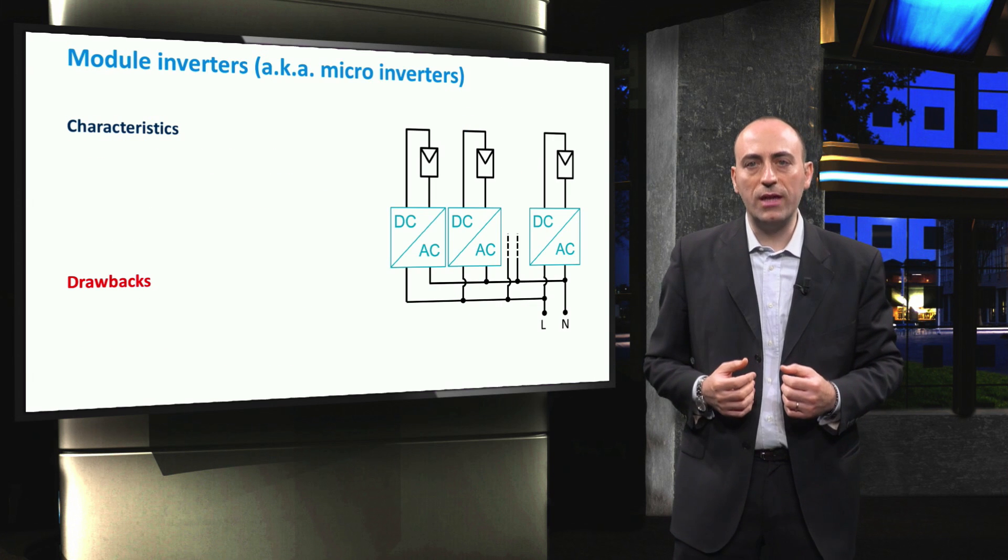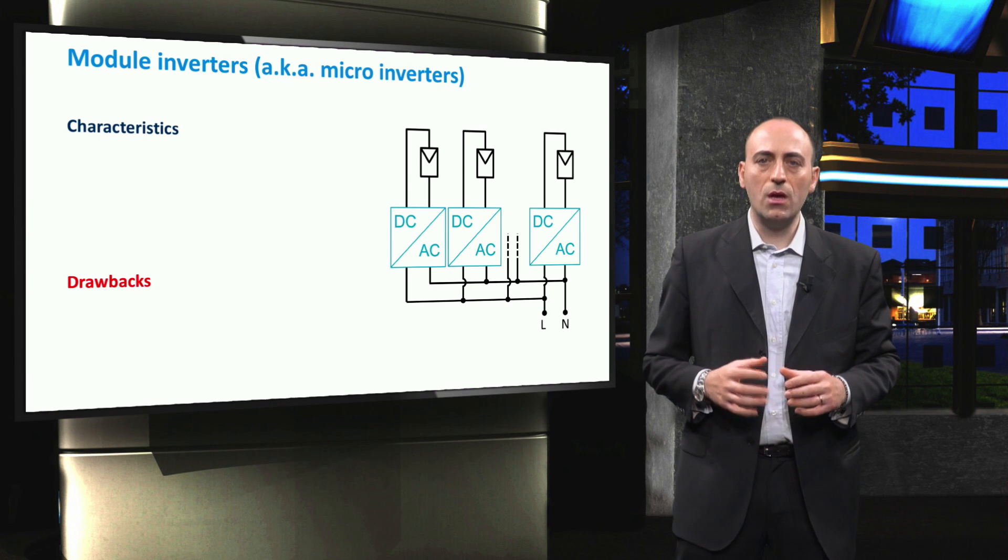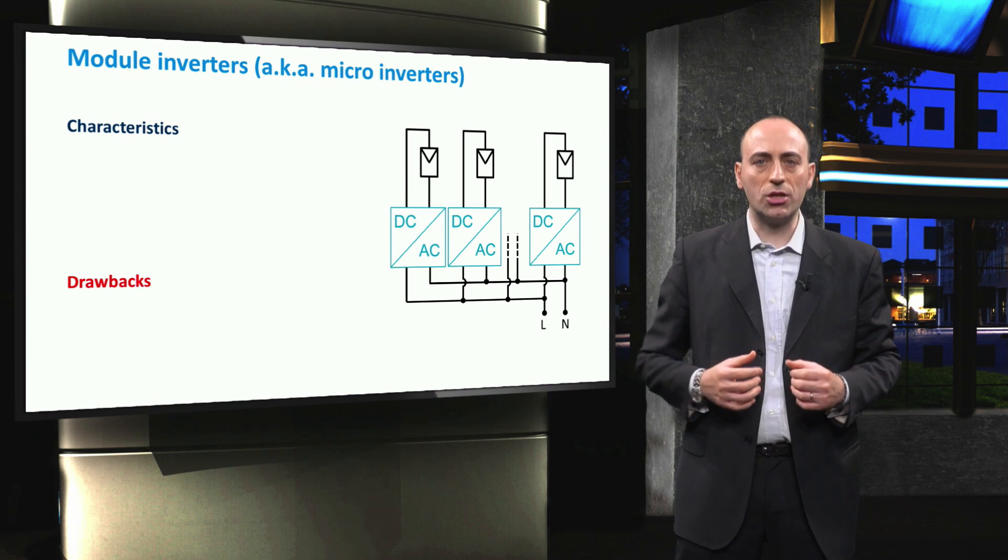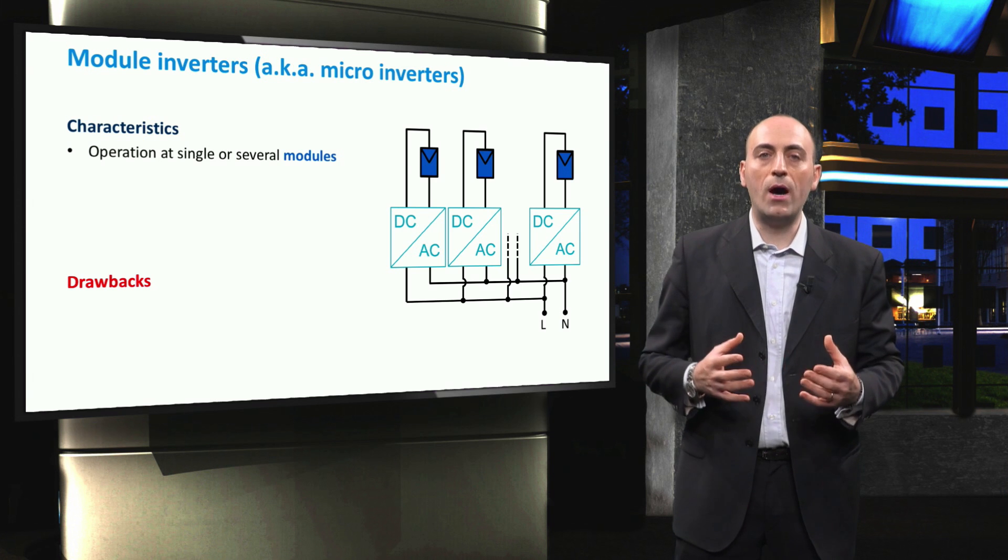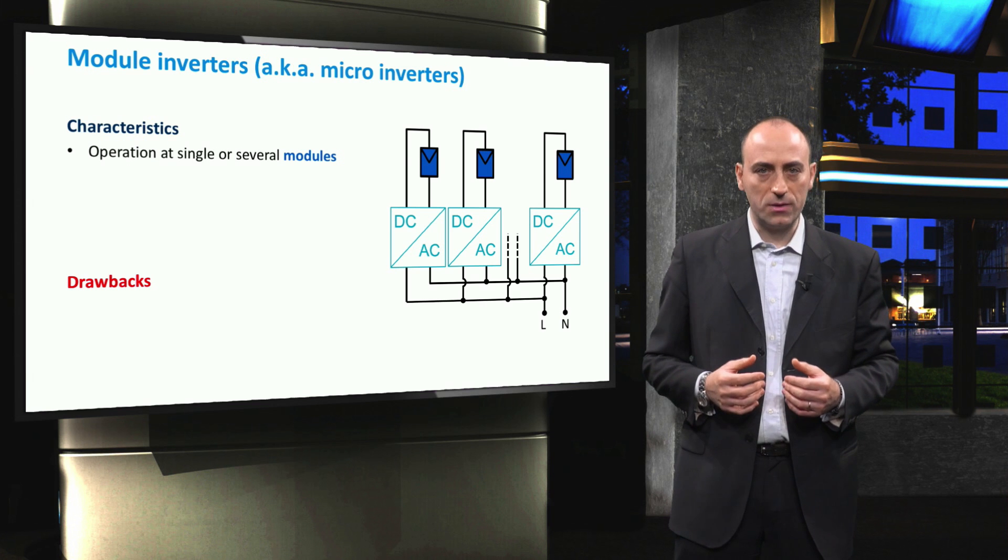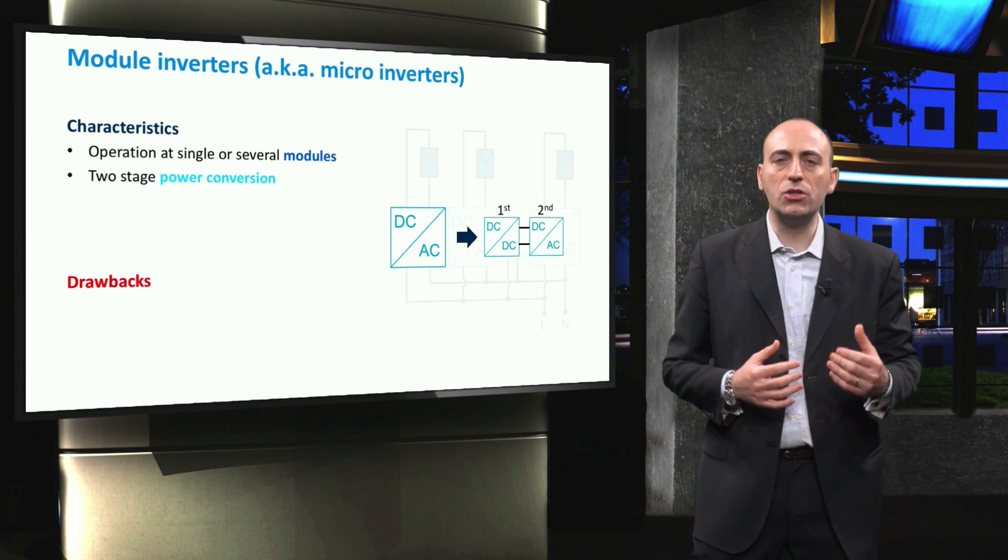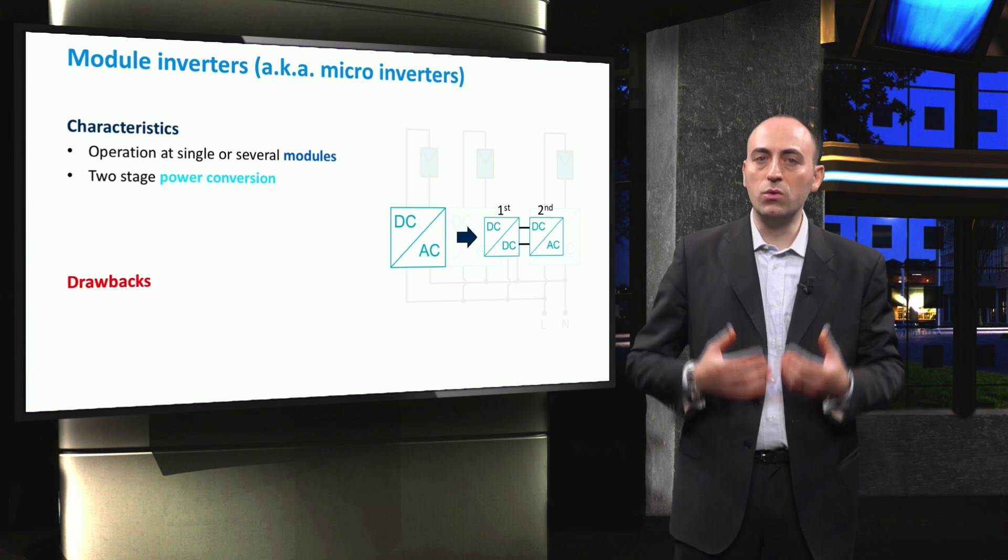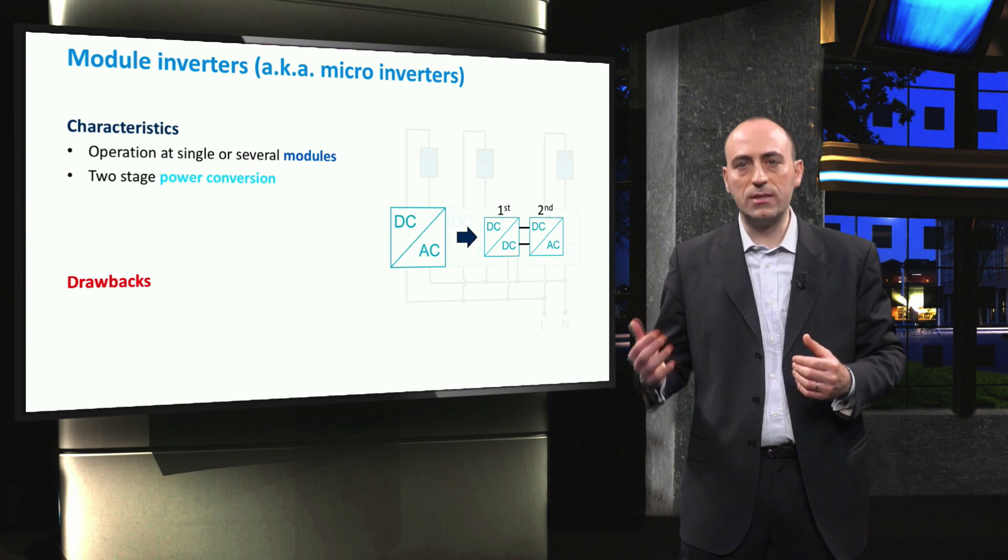A very different architecture is that of the module inverters, also called the micro-inverters, because they are just as big as the junction box. These inverters operate directly on one or several PV modules, and have power ratings of several hundreds of watts. Because of the low voltage rating of the PV module, these inverters often require a two-stage power conversion. So, in the first stage, the DC voltage is boosted to the required value, and then it is inverted to AC in a second stage.